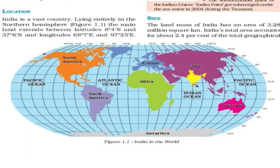From the picture, we can see that India lies in the Asian continent, specifically in the southern part of Asia. Therefore, India is described as a South Asian country. This is the location of India — it is known as a South Asian country in the world.